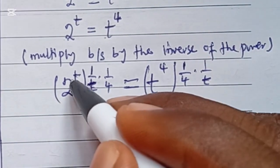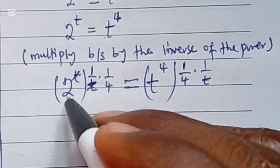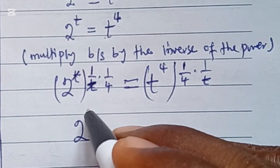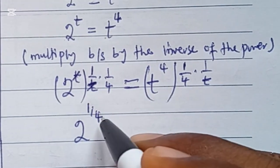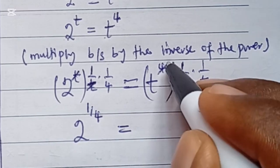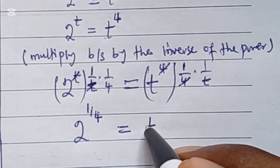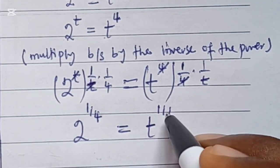So when we break it down, we see that t can easily cancel out t. What we are left with on this side is 2 to the power of 1 over 4. It's equal to, on the right-hand side, 4 we cancel out 4, and what we are left with is t to the power of 1 over t.